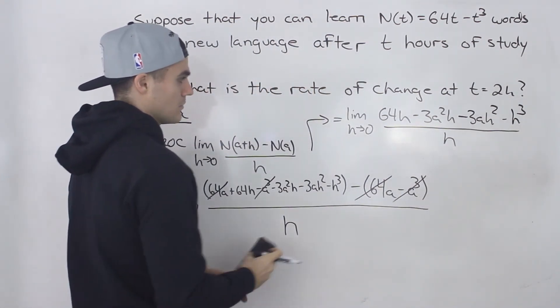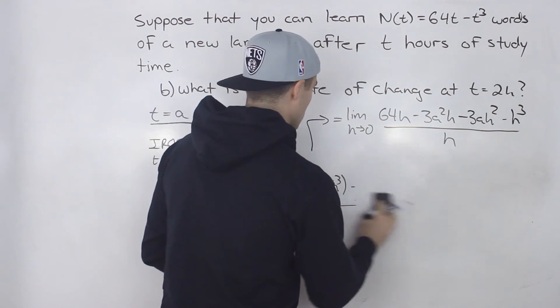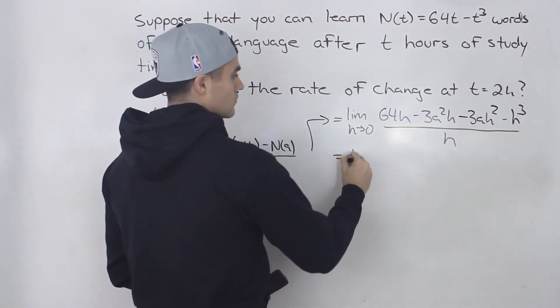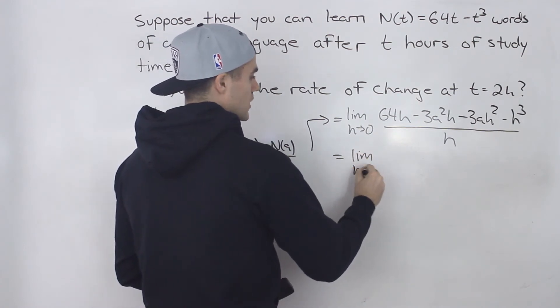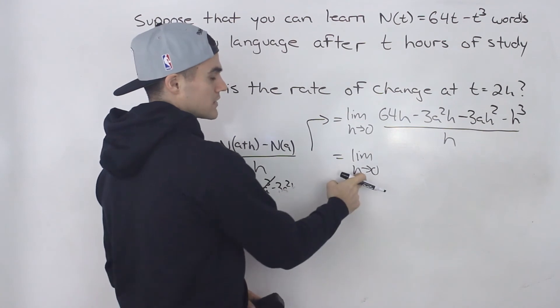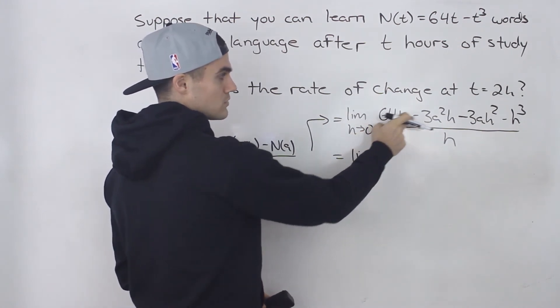So looking a lot better, I'm going to erase this portion here, give myself a little more room. So what are we trying to do? We're trying to get rid of this h in the denominator, so then we can plug in 0 for h. So we can do that now.